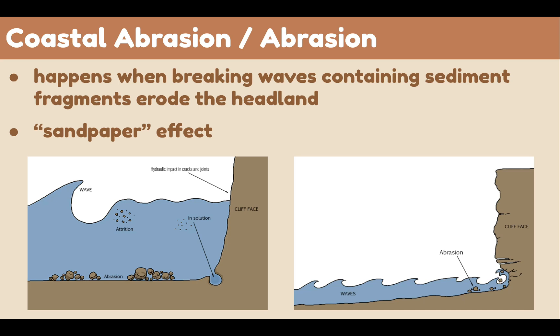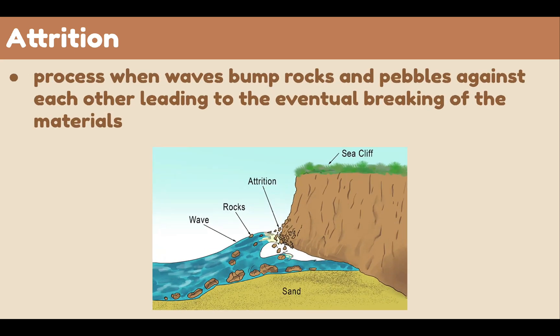As you can see, the waves carry the large fragments and destroy the coast. There is another process called attrition. Attrition is the process when waves bump rocks and pebbles against each other, leading to the eventual breaking of the materials. To clarify the difference: abrasion is when two surfaces rub against each other, and attrition is where they bounce or smash against each other.